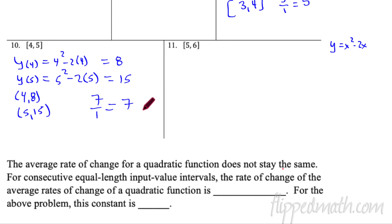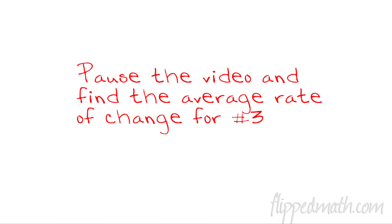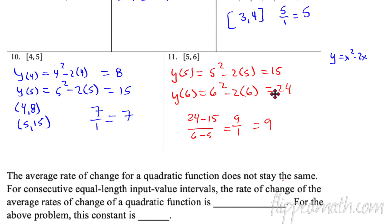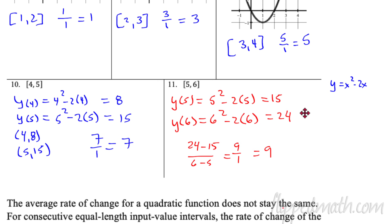Do number 11 yourself — use the equation and find the average rate of change between those points. How'd you do? We already found y(5) = 15, and y(6) = 24 − 12 = wait — the answer comes to an average rate of change of 9.